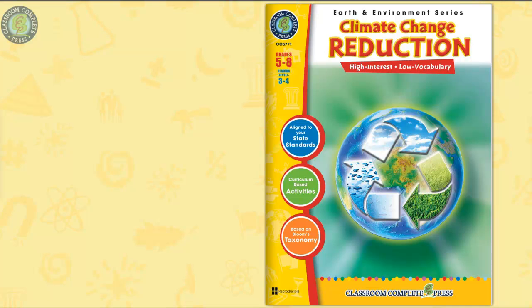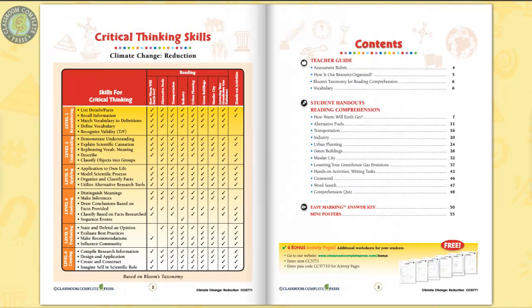This is the Climate Change Reduction Ready-Made Lesson Plan for students in grades 5 to 8, with a simplified reading level of grades 3 to 4. Aligned to STEAM and Next Generation Science Standards, this resource is 60 pages of content within 8 chapters, full of vocabulary, comprehension, and hands-on activities.